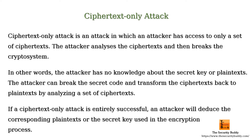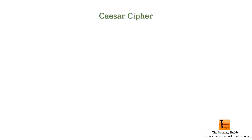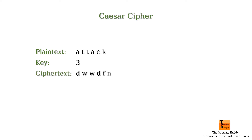Let's look at an example of the Caesar cipher. We know that in the Caesar cipher, each letter of the plaintext is replaced by a letter which is a fixed number of positions down the alphabet, and that fixed number of positions is called the key. For example, if the key is 3 and the plaintext is 'attack', then the corresponding ciphertext will read as shown.